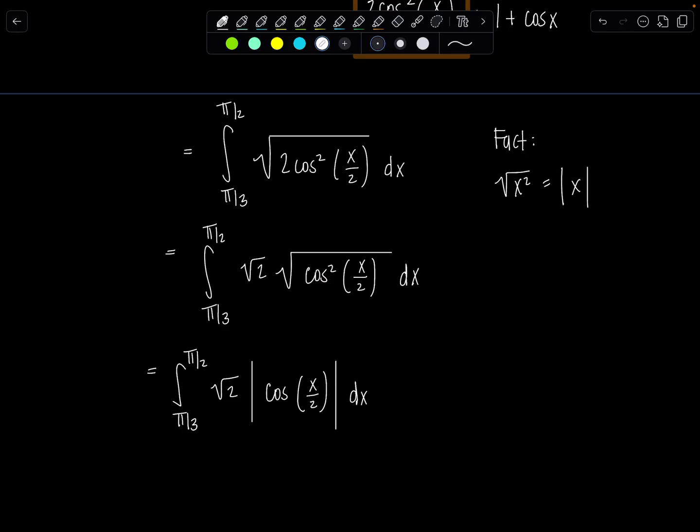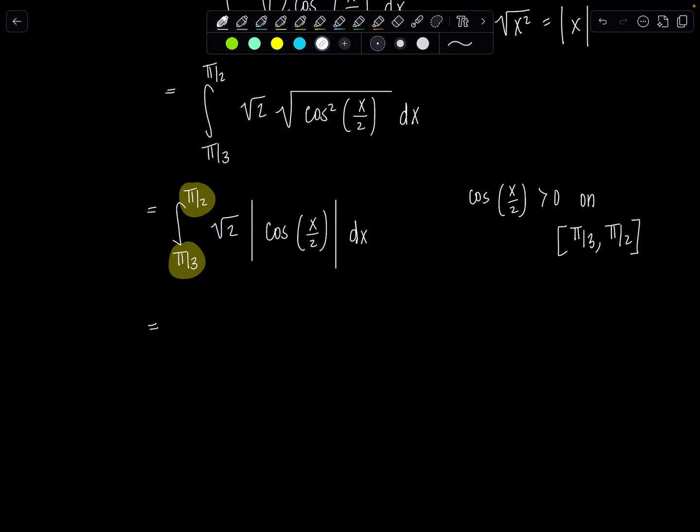So how do we proceed? How do we integrate with this absolute value? Well, this is where you go hallelujah—they gave me a definite integral from π/3 to π/2. Do you know what quadrant that's in? That's quadrant 1. And cos(x/2), remember, is half the angle. So you're going from π/6 to π/4. It's positive on the interval from π/3 to π/2. So I can drop the absolute value bars and proceed worry-free, which is good.